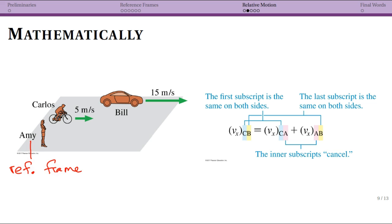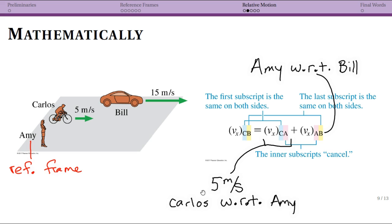So Amy is our reference frame. Carlos and Bill then are moving in Amy's reference frame. But we could talk about the relative velocity between Carlos and Bill. Notice that there are two subscripts here. The order matters.